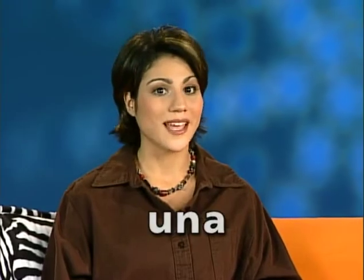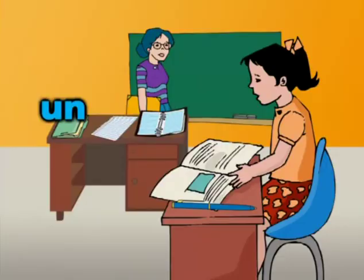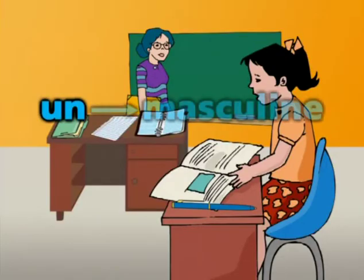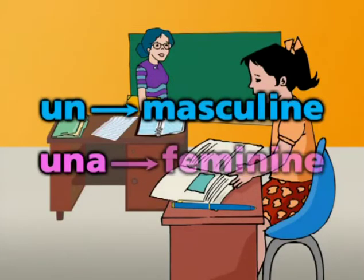The indefinite articles in English are 'a' and 'an' — a bug, an insect. In Spanish, the singular indefinite articles are un and una. Un is masculine, una is feminine.